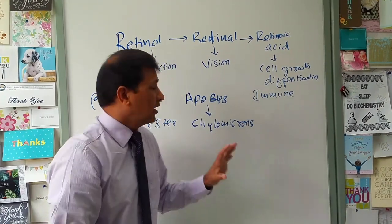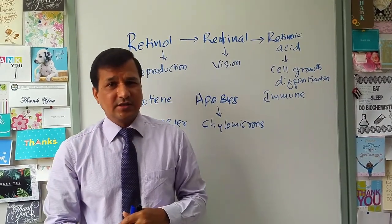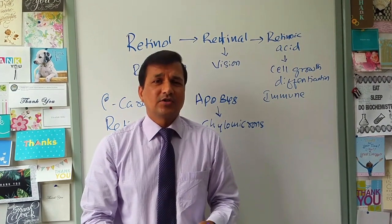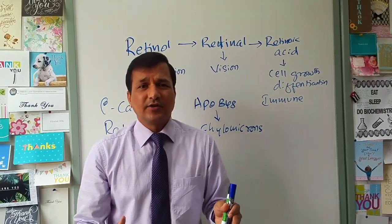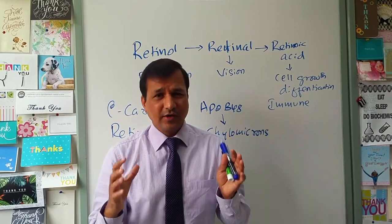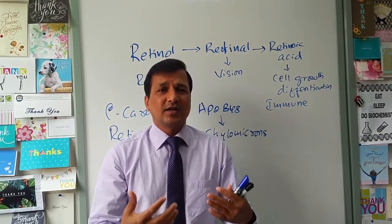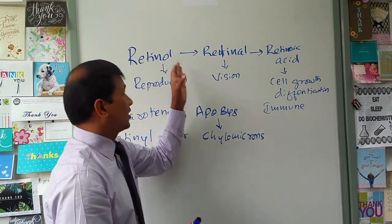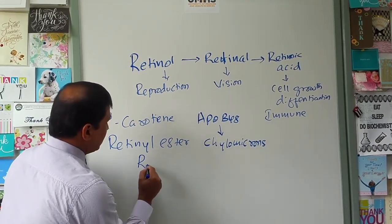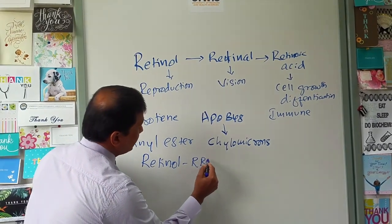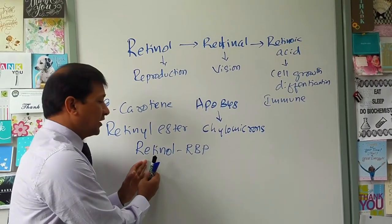From systemic circulation, chylomicrons ultimately reach the liver. When taken up by the liver, retinol ester is offloaded and stored. Ninety percent of our vitamin A is stored in the liver as retinol ester. When the body needs vitamin A, this retinol ester is broken down into retinol, the alcohol form, and released into the blood.